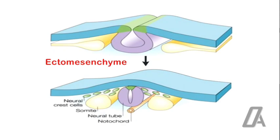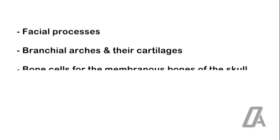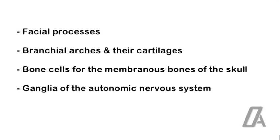The neural crest cells give rise to diverse structures, both near the site of their origin and at remote sites. In the head and neck region, the neural crest cells give rise to the facial processes, the branchial arches and their cartilages, the bone cells for the membranous bones of the skull, ganglia of the autonomic nervous system, leptomeninges, and so on.